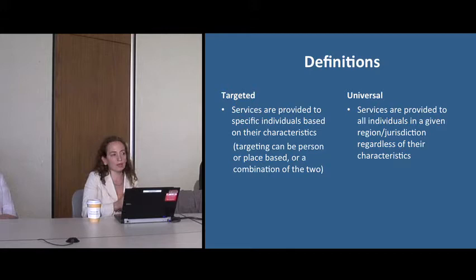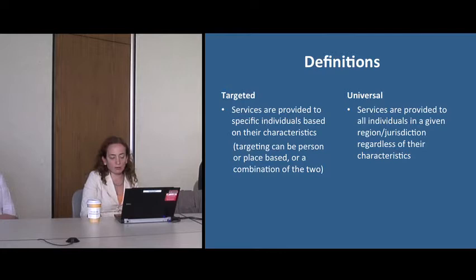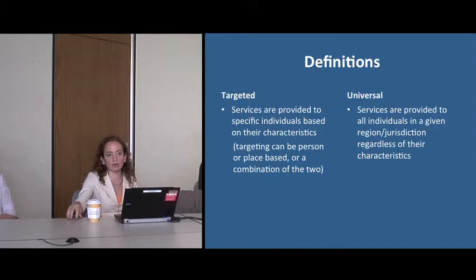Targeting can happen based on the characteristics of the person, but sometimes it's done based on location — generally referred to as place-based targeting. It's typically driven by the proportion of people with particular characteristics in that location. Sometimes there's a hybrid: targeting particular locations and then, outside those areas, targeting individuals. We have that in Toronto, where municipal centers offer free services in high-needs areas, while elsewhere individuals may qualify for free services through a separate eligibility process.